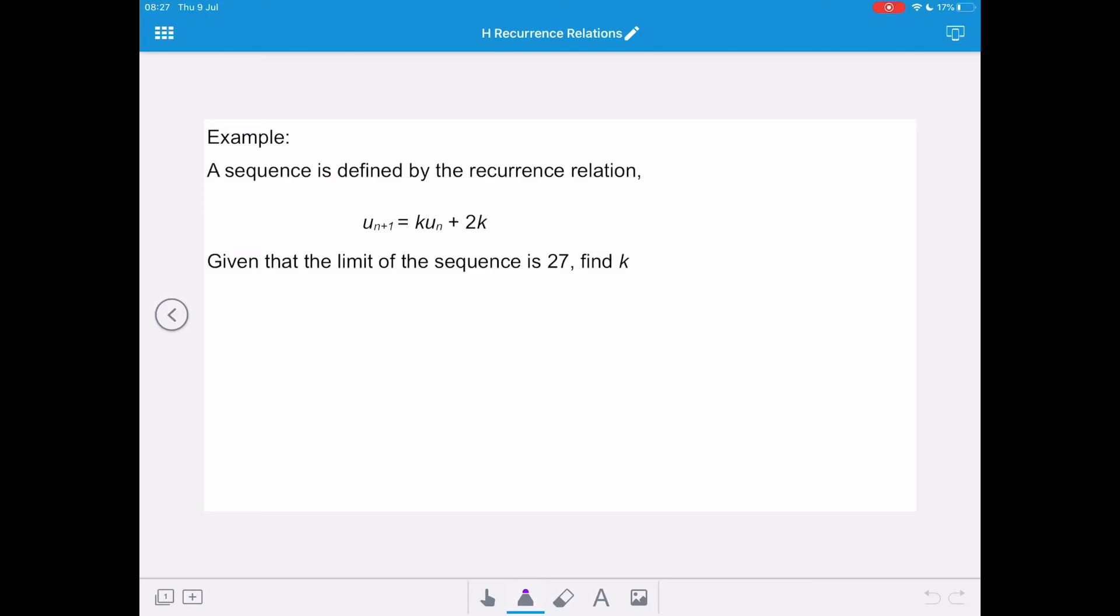Now, in this example, a sequence is defined by the recurrence relation un+1 equals kun plus 2k. And given that the limit of the sequence is 27, we're asked to find the value for k.